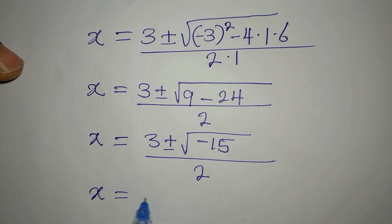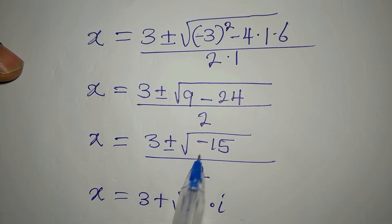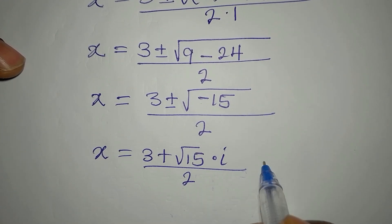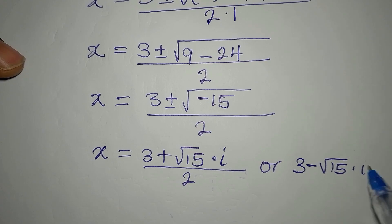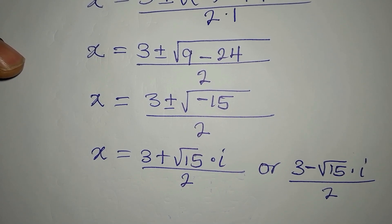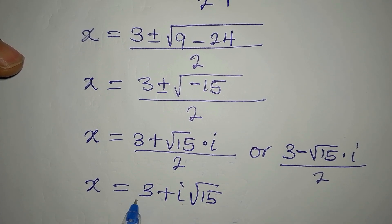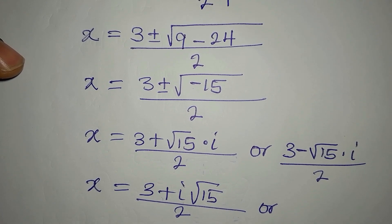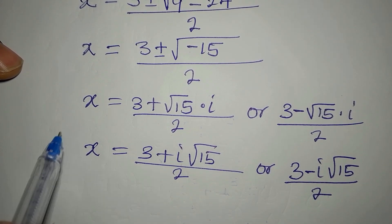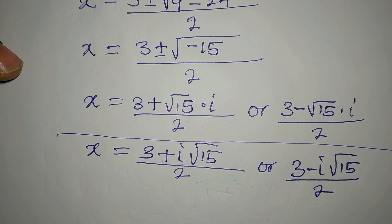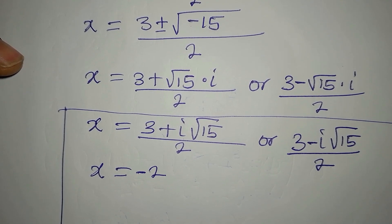So x equals 3 plus or minus the square root of negative 15, divided by 2. Because of the negative under the square root, we introduce i. This gives x equals 3 plus i root 15, divided by 2, or x equals 3 minus i root 15, divided by 2. Together with x equals negative 2 found earlier, these are the three solutions to the equation.